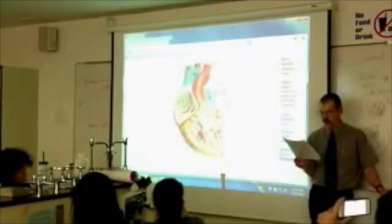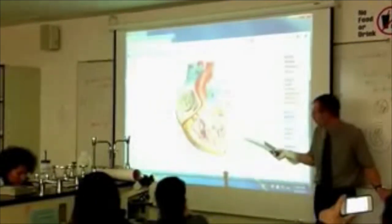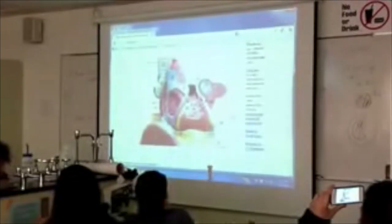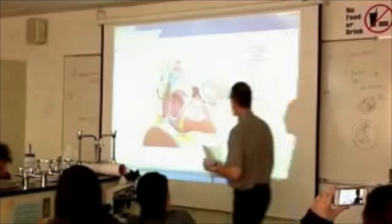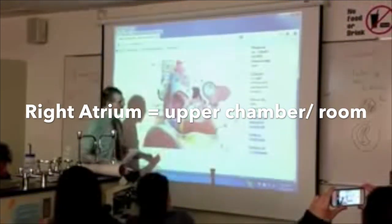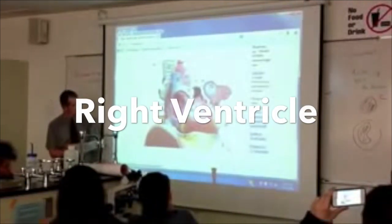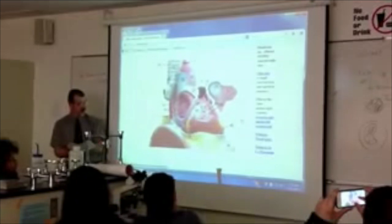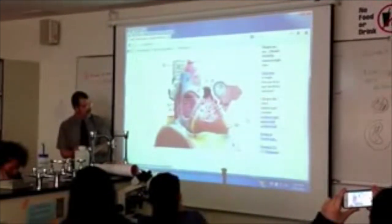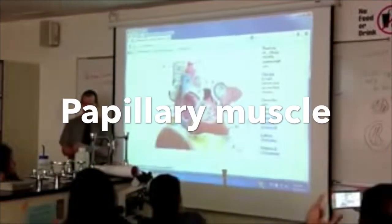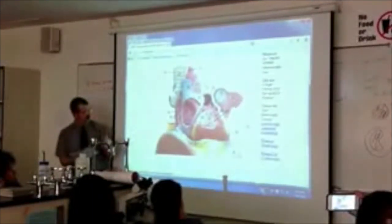Be careful of those muscle words — pectinate and papillary are similar but not the same. We've got our valves, our heartstrings, and our bumps. Number 26 is a chamber — right atrium. Number 23 is a chamber — right ventricle.